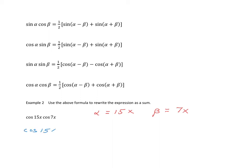Cosine of 15x times cosine of 7x is equal to one half of cosine of 15x minus 7x plus cosine of 15x plus 7x. If I combine like terms, I will get my final answer.